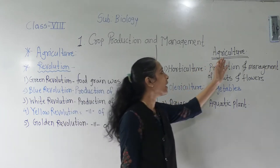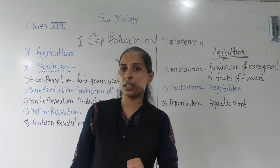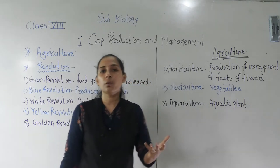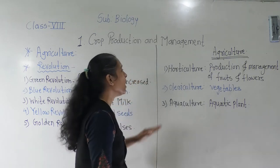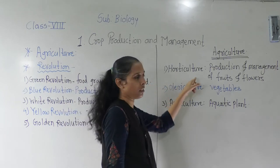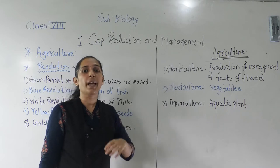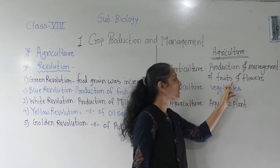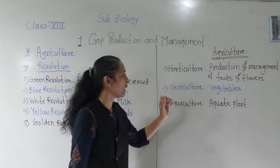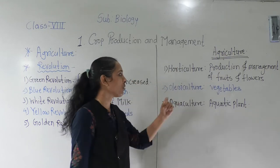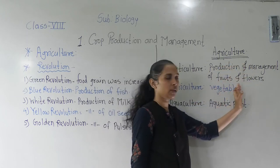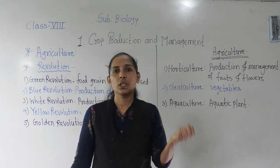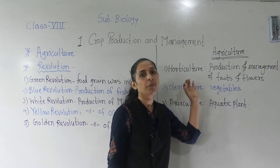Now the next point: there are different branches of agriculture. We already discussed the definition of agriculture. Now we will discuss the different branches of agriculture. The first branch is Horticulture. Horticulture is the branch of agriculture which deals with the production and management of fruits, flowers, and ornamental plants.